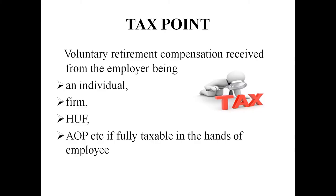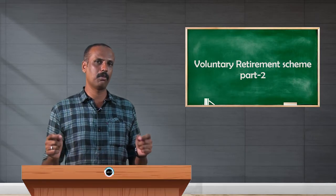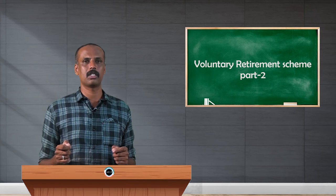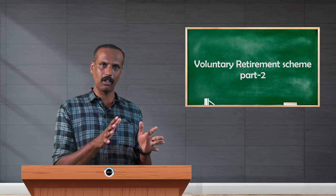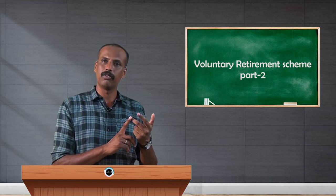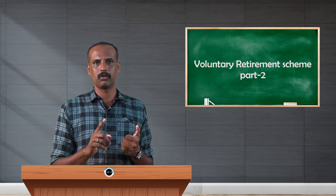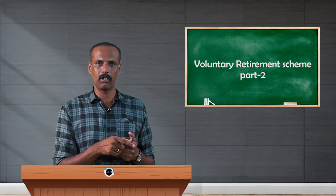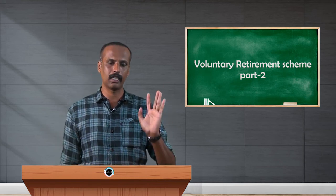A few more points: if VRS compensation is received from an employer who is an individual, HUF, firm, or association of persons, it is fully taxable in the hands of the employee — there is no exemption. If an employee works under this kind of employer, the compensation is fully taxable.